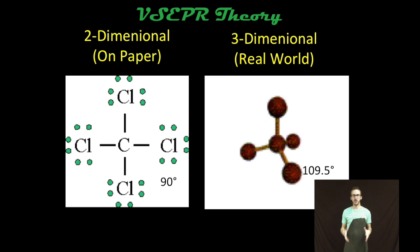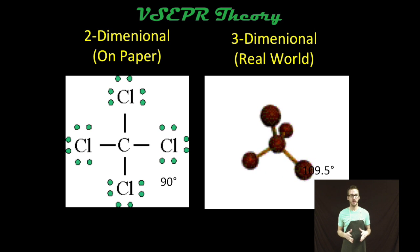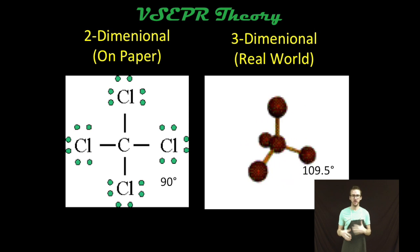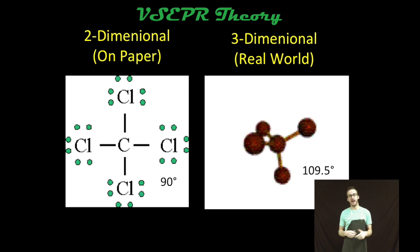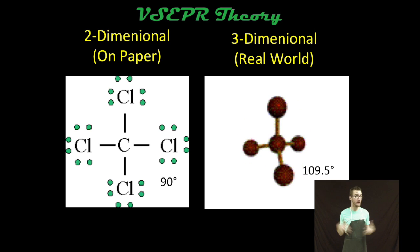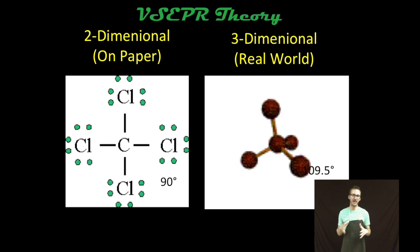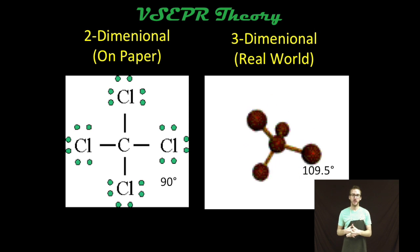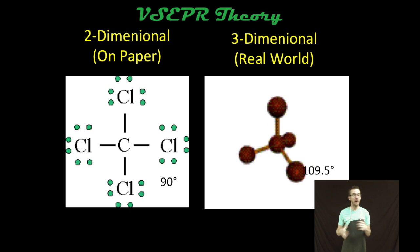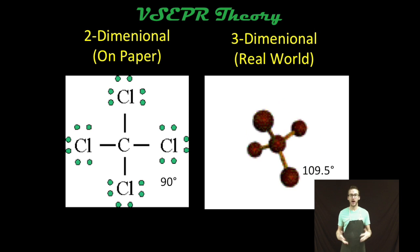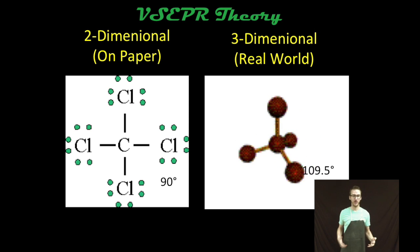So as you take a look at your screen, we've got a depiction of a Lewis structure for the molecule CCl4. And on paper when we draw that Lewis structure, it looks like those bonded pairs of electrons can only get about 90 degrees from one another. But it turns out that in the three-dimensional real world, they can actually get a little further apart by taking advantage of the third dimension. In reality, those shared pairs of electrons are 109.5 degrees from one another. And VSEPR theory is all about predicting what those three-dimensional shapes are going to be.